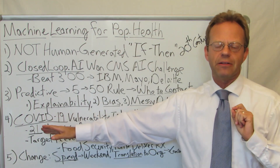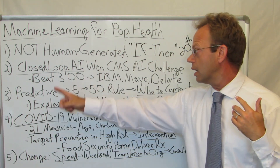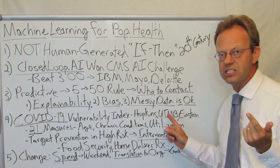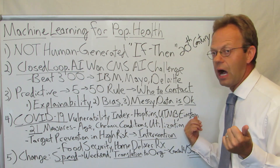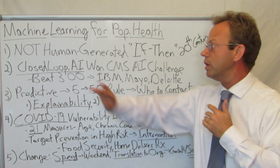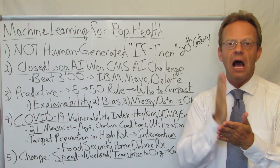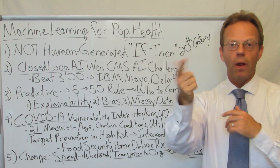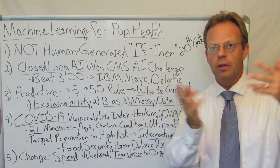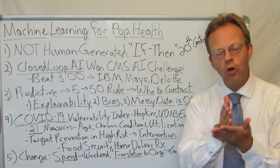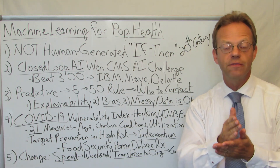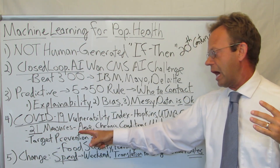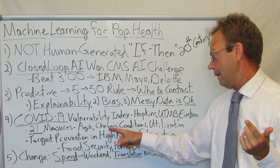Now here's the practical application: during COVID, Closed Loop AI created the COVID-19 vulnerability index that was used by Johns Hopkins, the University of Texas Medical Branch down in Galveston, and Einstein as well. They asked: can we use machine learning to identify who would be at high risk of complications from COVID? Not who would get infected, but if you got COVID, which people would be at high risk of serious complications? So they looked at 21 measures that were a combination of demographic factors like your age and gender.